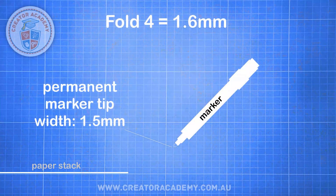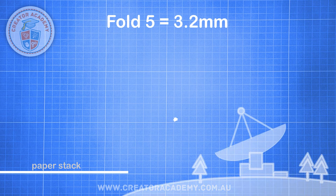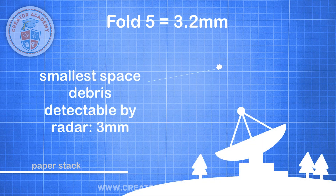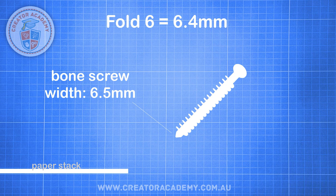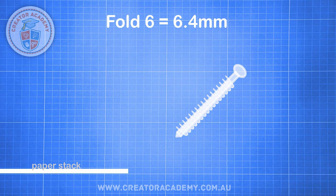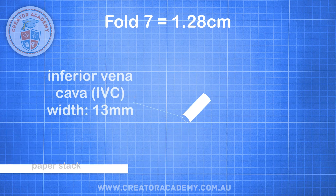At fold 5 we are over 3 millimetres higher, which is the size of the smallest piece of space debris that can be tracked with a ground-based radar. Fold 6 increases our paper stack to 6.4 millimetres, which is about the thickness of a bone screw that aids in healing a fracture. We break the centimetre barrier with fold 7, which is about the width of the largest vein in the human body, the inferior vena cava.